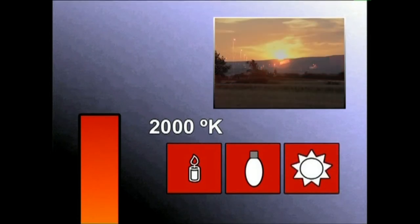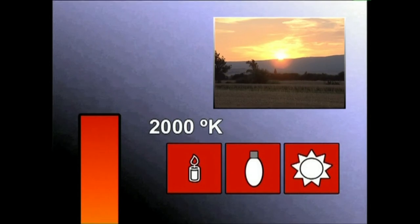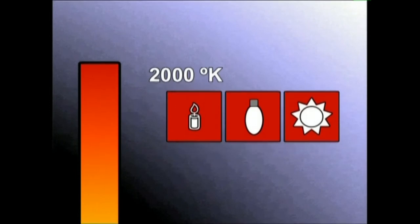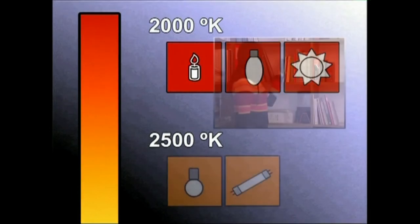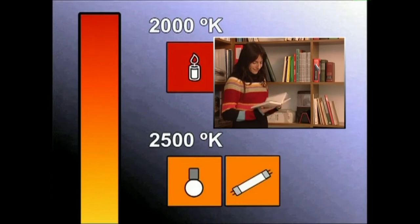Argi iturri naturala, eguzkiarena alegia, arratxean eta egun sentian iristen da kolore temperaturen balio horietara. 2.000 eta 3.500 gradu kelvinek kolore temperaturak laranja koloreko argia ematen du. Halakoa da goritasun lamparek eta fluorezente gehienek ematen duten argia.